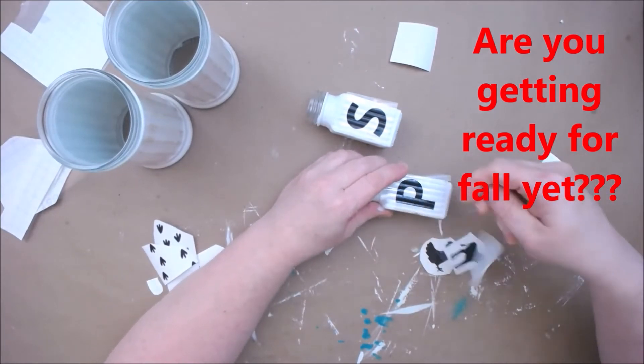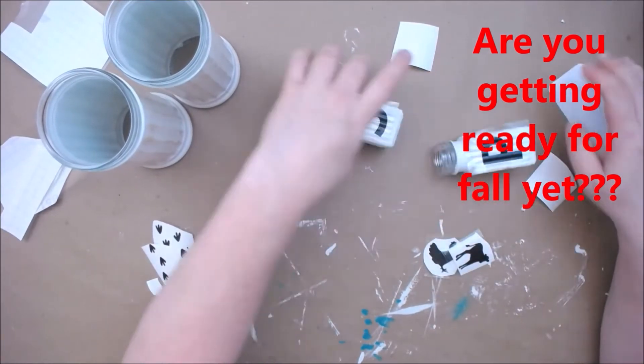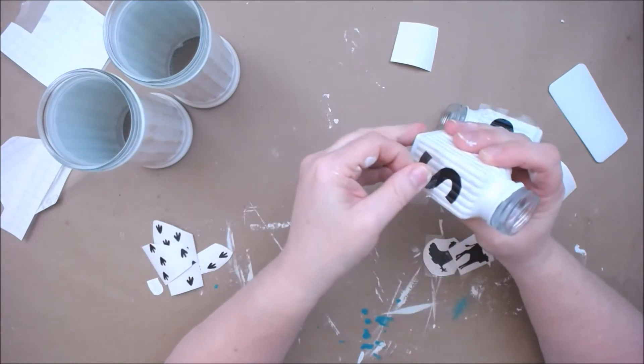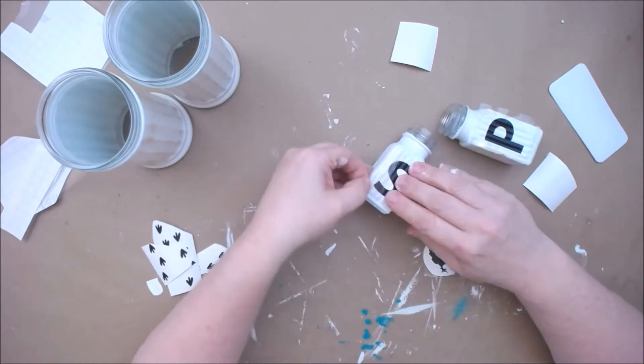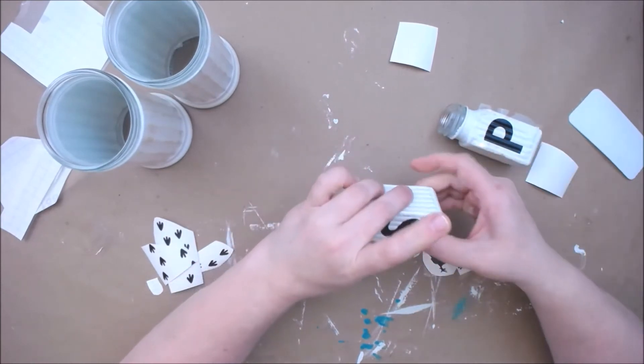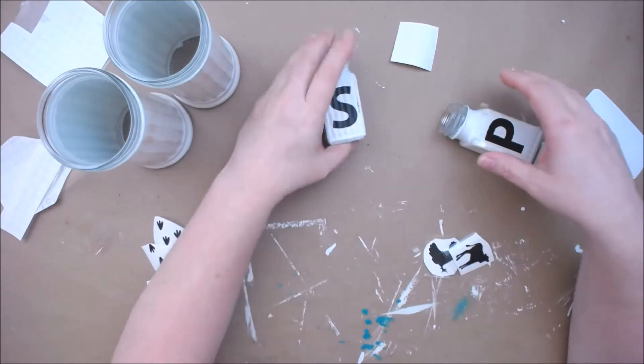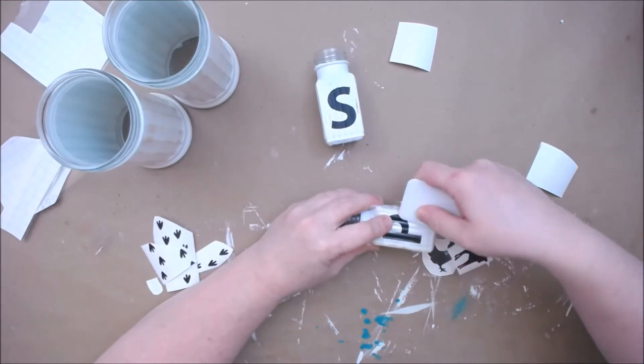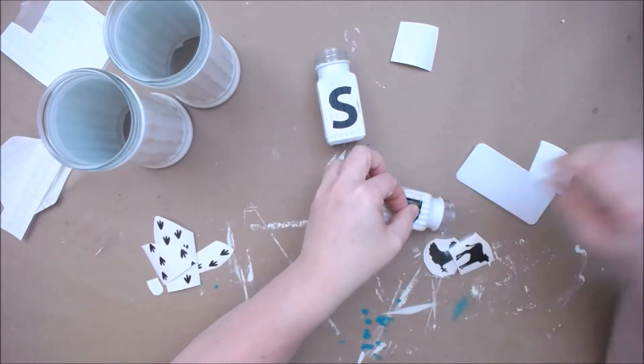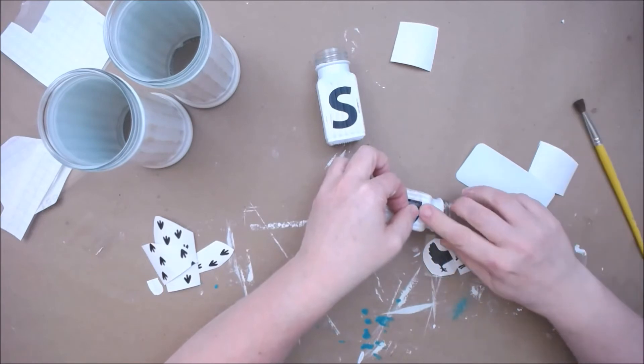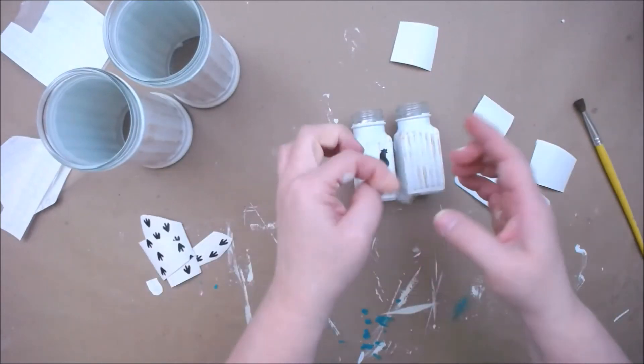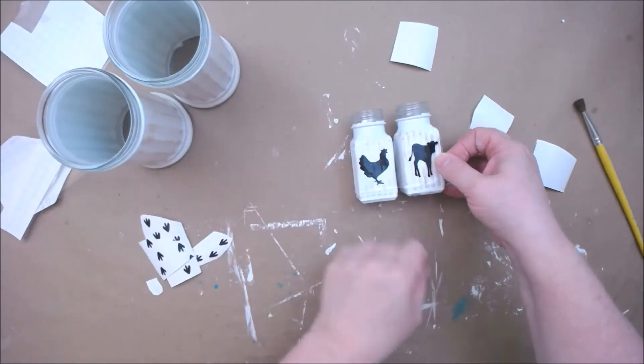Let me know in the comments - are you getting ready for fall? Are you excited for fall? Fall is my favorite time of year, winter comes in second. I'm a cold weather girl. These stickers were so much fun to make and put on. The little ridges were just a bit challenging, so I used a scraper to make sure it went down into the edges nicely. I wanted the salt and pepper shaker to have a tiny little chicken and cow, which came out so cute.